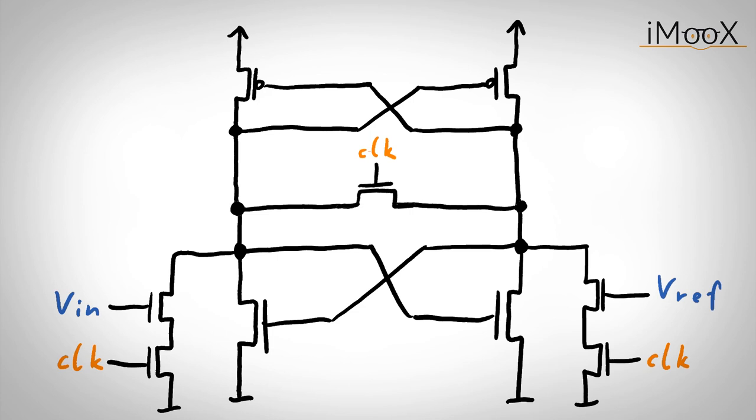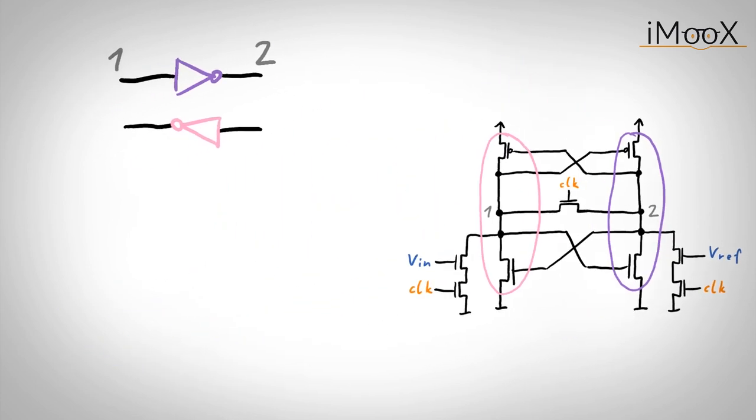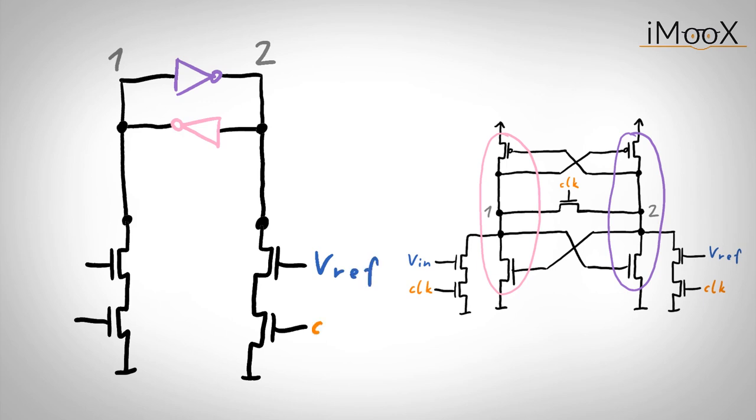Now, let us try to redraw or to restructure some things. This PMOS NMOS circuit looks like a CMOS inverter with input node 1 and output node 2. The same is true for the other branch with inverted input and output nodes. What we get is simply two inverters that are connected as a D-Latch with some additional clock and reset circuitry.